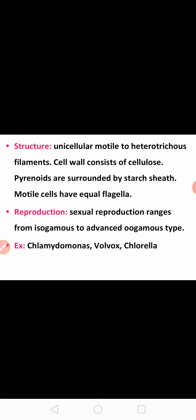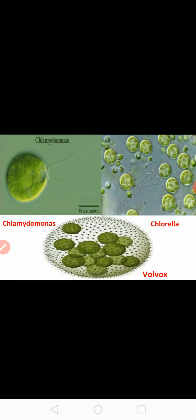Examples of Chlorophyceae are Chlamydomonas, Volvox, and Chlorella. In this slide you can see the pictures of Chlamydomonas, Chlorella, and Volvox. Chlamydomonas and Chlorella are unicellular members, whereas Volvox is colonial, found in the form of a colony.